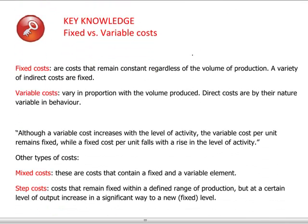Then we have another way of thinking about costs: the distinction between fixed and variable costs. Fixed costs remain constant regardless of how much we are producing — that is, regardless of the level of activity. Variable costs are those costs which change in proportion with the amount of output.